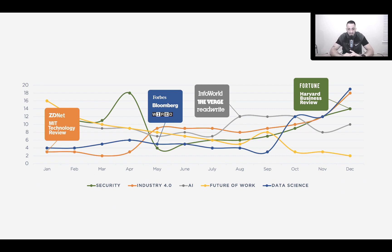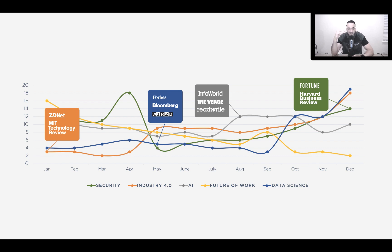Using the same top 20 influencers but looking over time — these are the same topics: security, Industry 4.0, AI, etc. From January through December, Industry 4.0 as a topic is growing in demand and capturing more of this audience's attention. Meanwhile, future of work was really high in January and is now declining. Security in general is all over the place. This is a way to predict the conversation of influencers so you can build your content around the keywords and phrases they're trending toward.